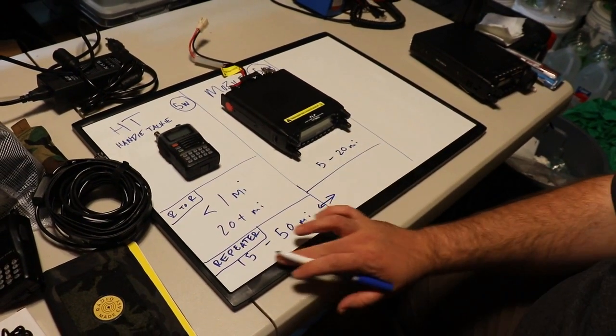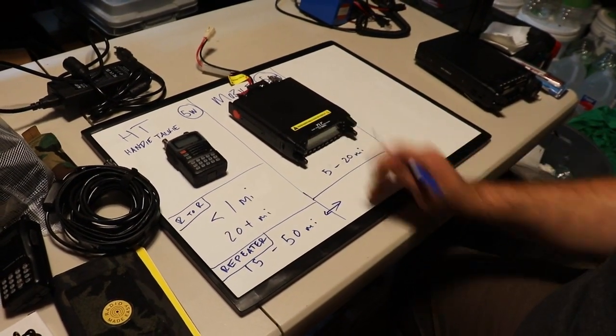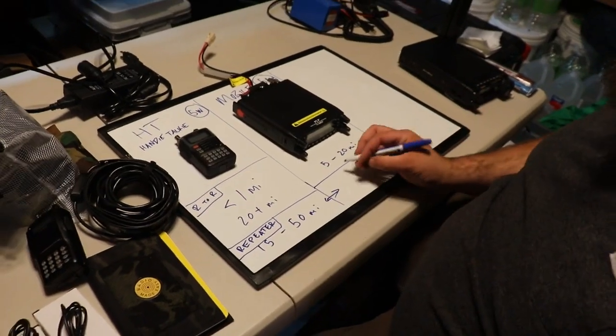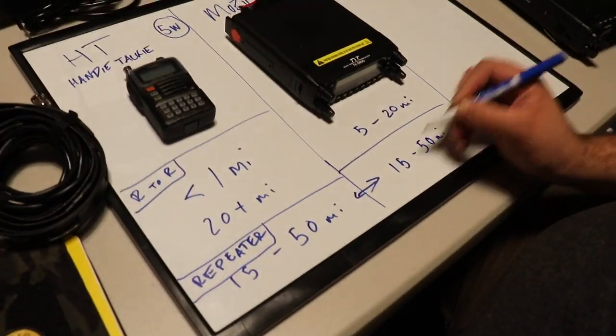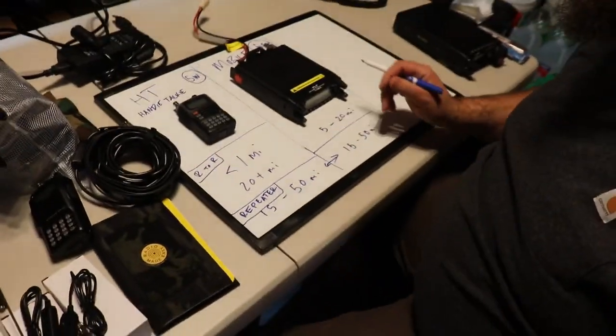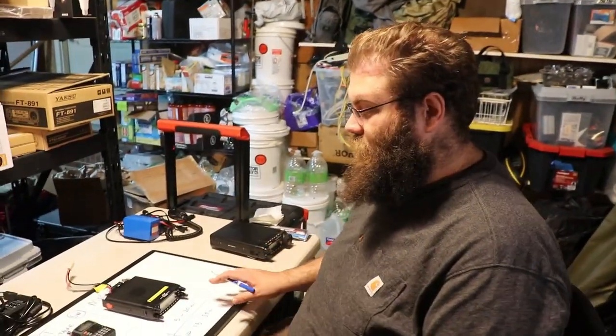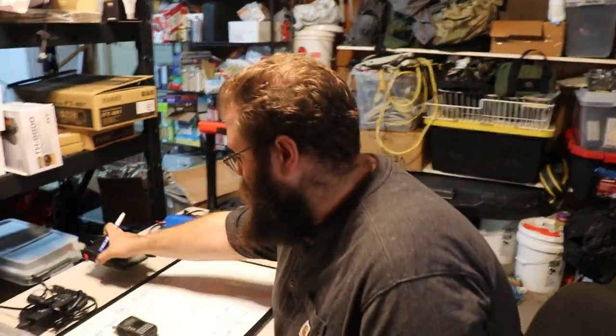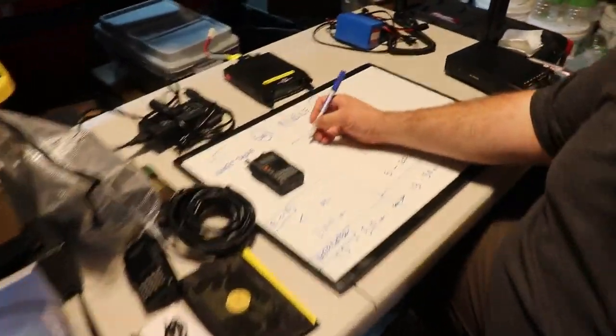You're going to get identical repeater performance. It is able to do the same things on repeaters that these can do. Again, 15 to 50 miles on repeaters. So, if you're within 50 miles, what you're seeing here is you can generally use these kind of radios. What your options are for that are going to be a couple of different things.